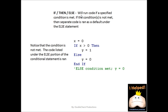Here we have the if-then-else statement. We have x equals 0. The question asks: if x is greater than 0 — the answer is no — so it defaults to else. That means y equals 0. The else condition is met because there is no matching condition, and therefore y is assigned a value of 0.